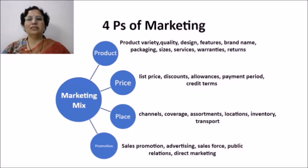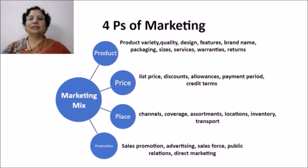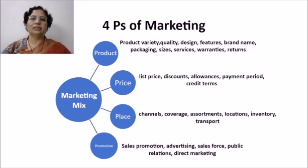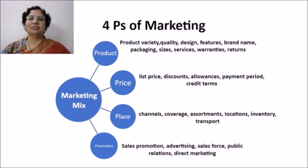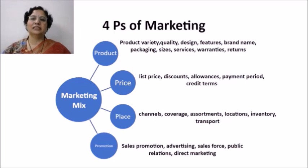The third P is place. Where will the customer buy my product? Where will the customer find my product? What kind of stores will the customer go to? What kind of channel will I use as a marketer? What will be the coverage area, and at what locations is my product available? How much inventory is available with intermediaries, and what kind of transport is used to make the product available? Channel, coverage, assortment — all these are methods used to make the product available to the customer at the right time, at the right place, in the right shape, at the right price.